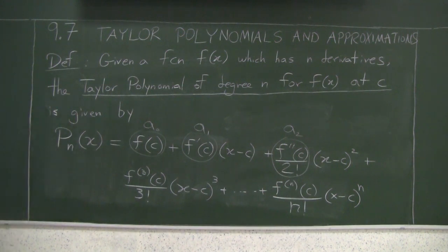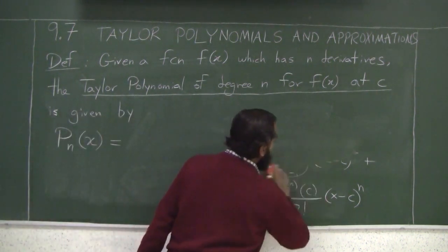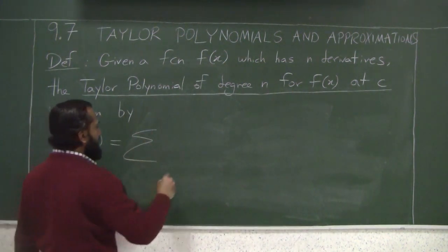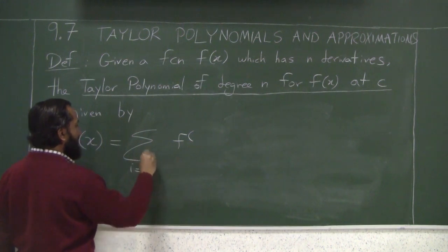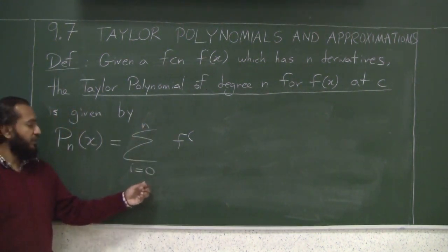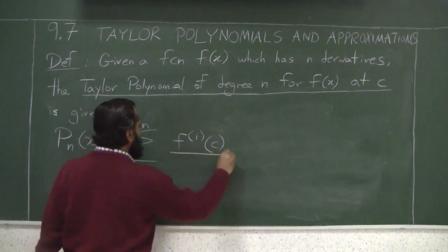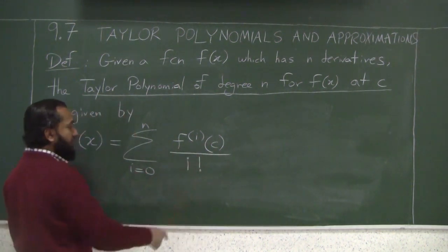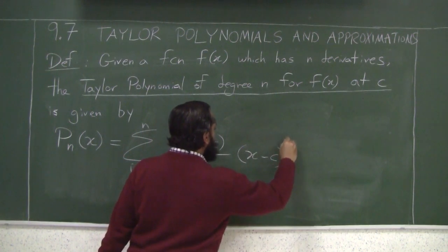If you wanted to write this in a compact notation, you could write it as sigma notation. Summation i from 0 to n: f^(i) evaluated at c over i factorial times (x minus c) to the power i.